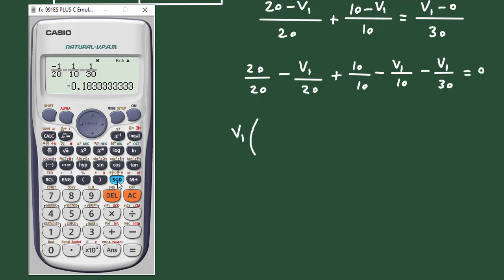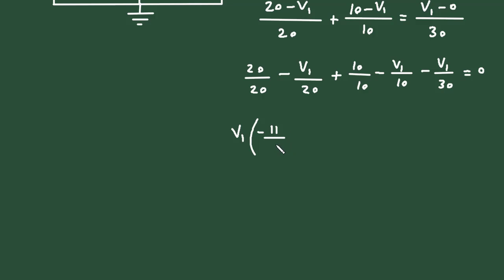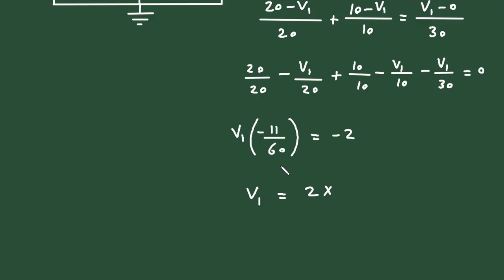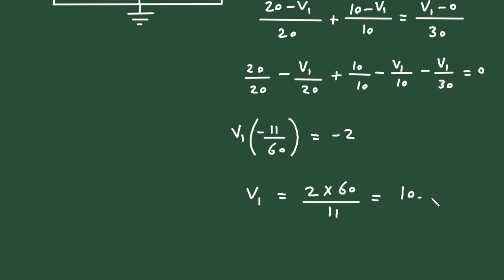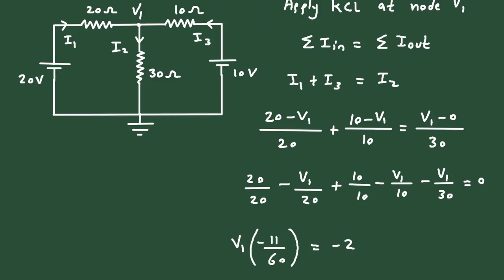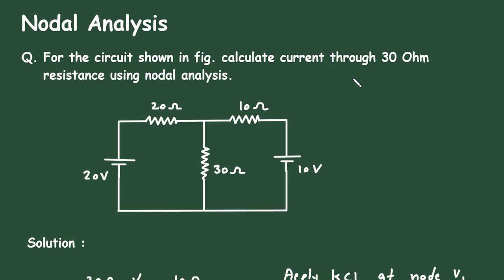This gives minus 11/60. Solving the constants: 1 plus 1 plus 2 equals 0, or taking 2 to the right side gives minus 2 equals minus 2. The minuses cancel, and we calculate V1 equals 2 multiplied by 60 divided by 11, which gives V1 equal to 10.90 V.